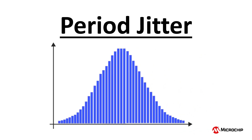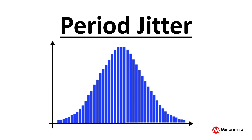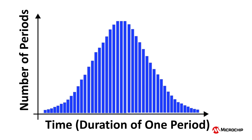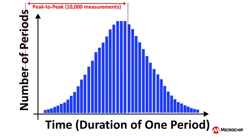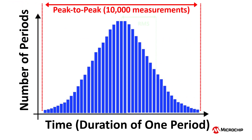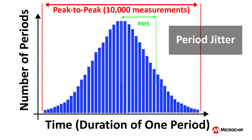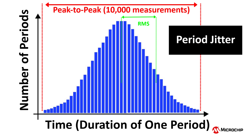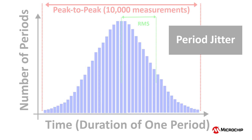These 10,000 values yield a time domain statistical distribution from which we can determine values such as peak-to-peak or RMS period jitter, which are values you may find specified in a data sheet.